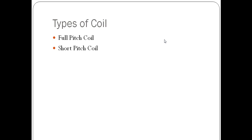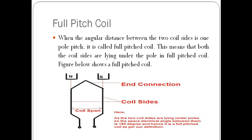There are basically two types of coil: full pitch coil and short pitch coil. A full pitch coil is a type of coil in which the coil span or coil pitch is equal to one pole pitch. As we can see in this figure, both the coil sides are lying under the poles of the machine, so the coil span or coil pitch is equal to 180 degrees — hence this type of coil is known as a full pitch coil.